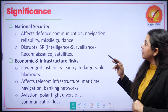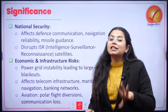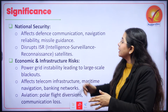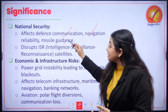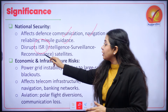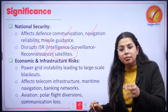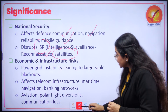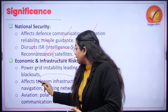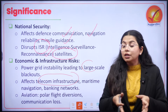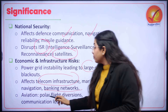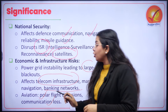Solar storm is directly related to national security because extreme solar storms can impact defense communication, navigation reliability, and missile guidance. It directly disrupts ISR — that is intelligence, surveillance, and reconnaissance satellites. It also has associated economic and infrastructure risks such as instability caused in power grids leading to large-scale blackouts. It can affect the whole telecom infrastructure and maritime navigation as well as banking networks, and it may risk polar flights leading to communication losses.